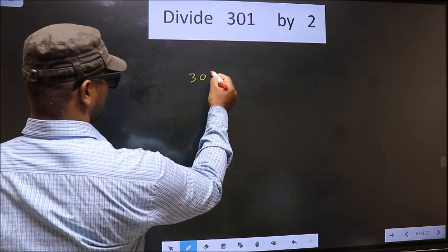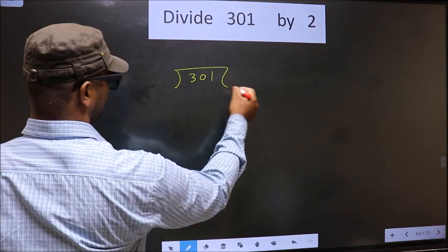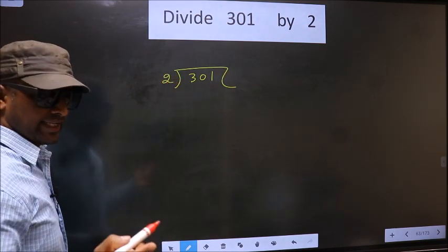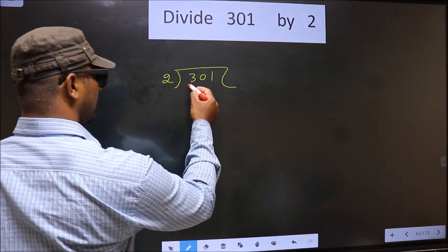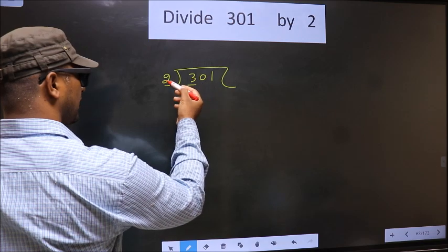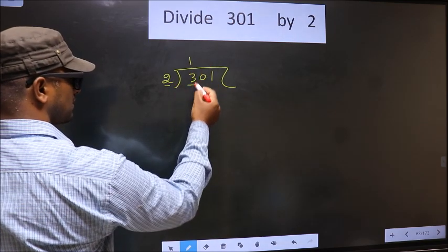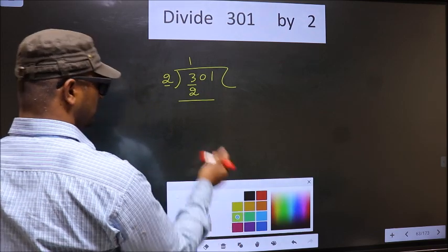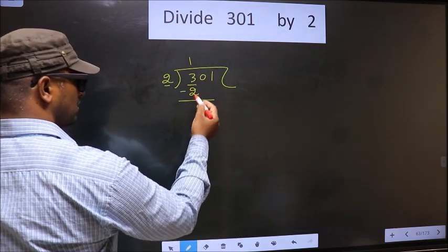That is 301, 2 here. Now, here we have 3 and here 2. A number close to 3 in 2 table is 2 ones, 2. Now you subtract. 3 minus 2, 1.